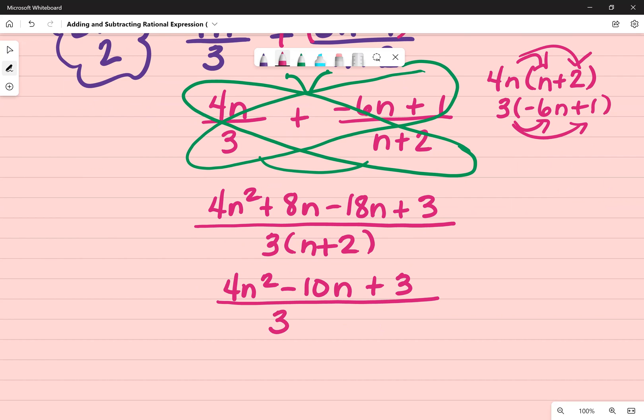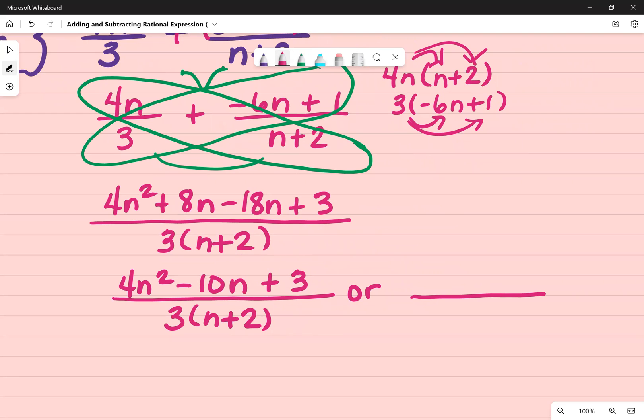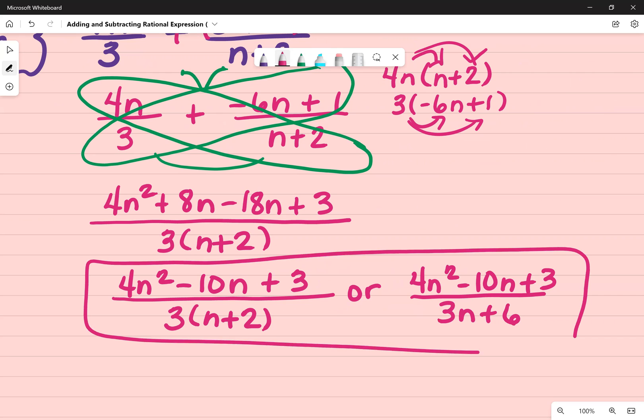So I can either leave it in this form or I can expand out the denominator. So leave the top 4n squared minus 10n plus 3, all over 3n plus 6. It just really depends on whoever is creating the assignment or the test sheet as to how they want the answer to look.